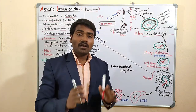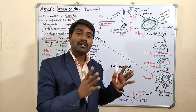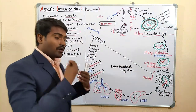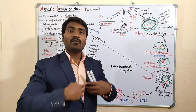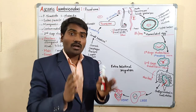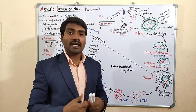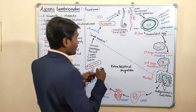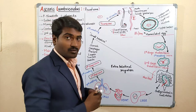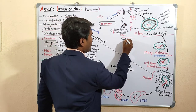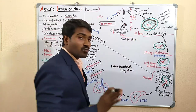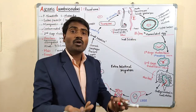Now let us talk about the life cycle. Through contaminated food and water, the second-stage rhabditiform larva enters the intestine, undergoes changes, and becomes an adult. The adult worms are present in the small intestine.